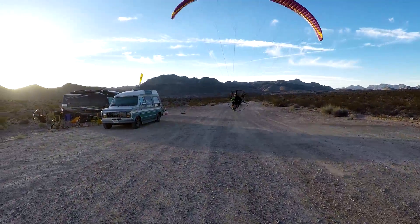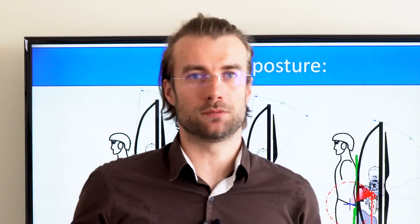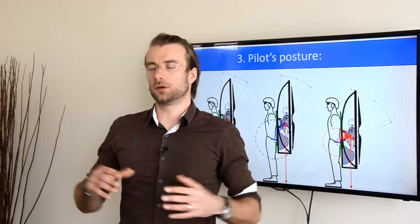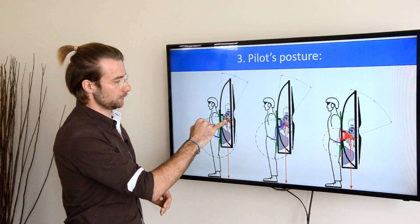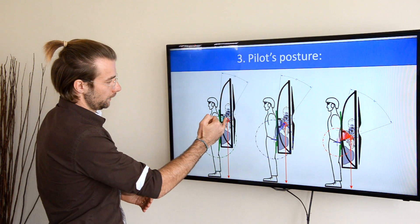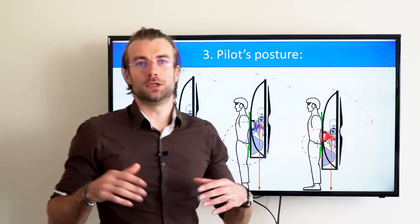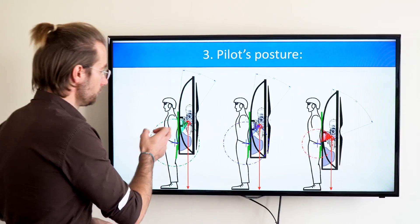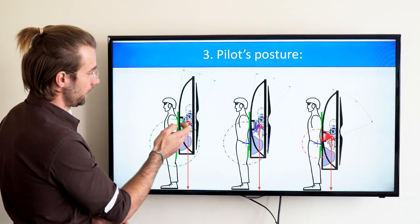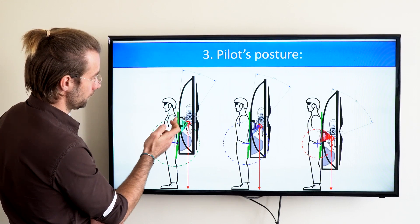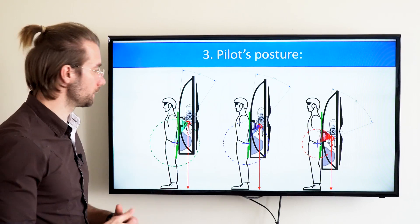So the third thing that influences your ground handling and running ability is your posture with the paramotor on your back. Obviously you cannot stand upright with a heavy load on your back, because if the center of gravity of the paramotor falls behind your heels, it would pull you backwards. You need to lean forward to get the center of gravity of the paramotor above your heels. That means from here to here, and then you are very stable.